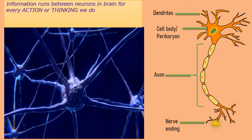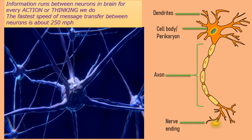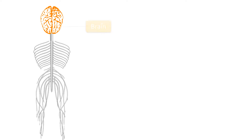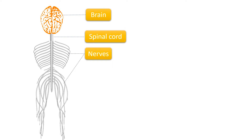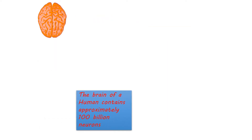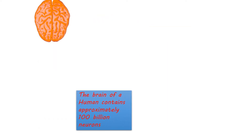From here, the impulse enters another neuron. The fastest speed of message transfer between neurons is about 250 miles per hour. Neurons are present in the brain, the spinal cord, and the nerves — these three together make up the nervous system.